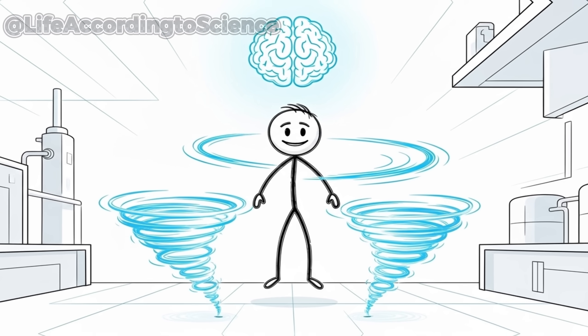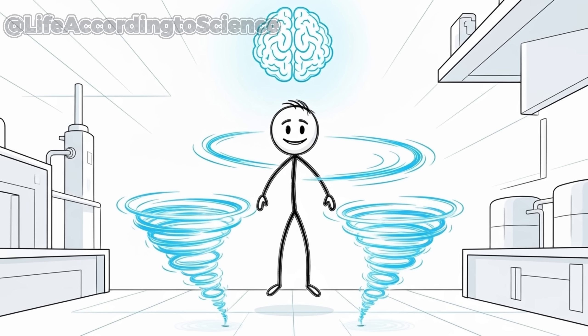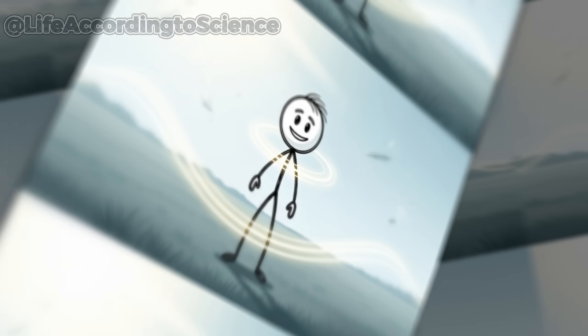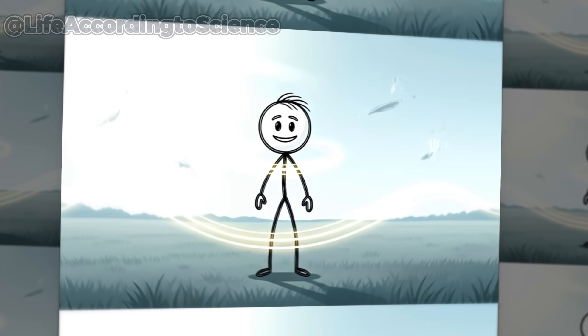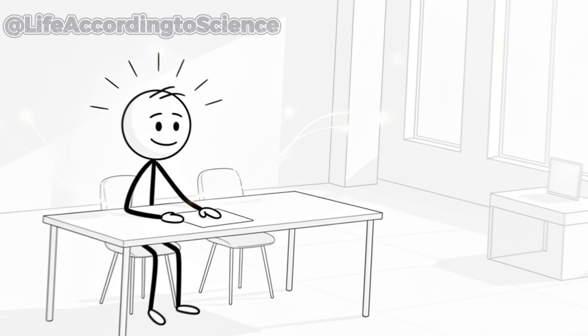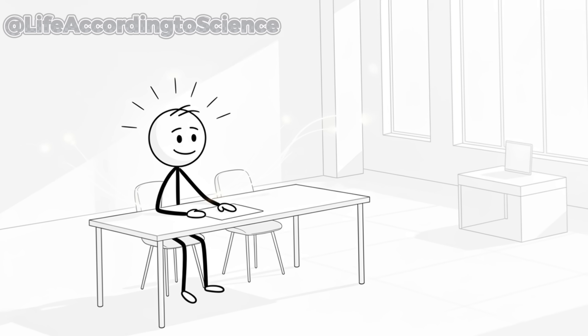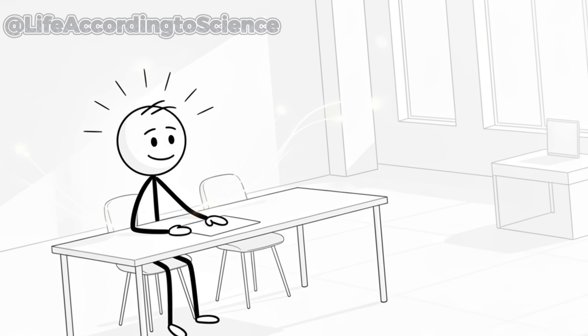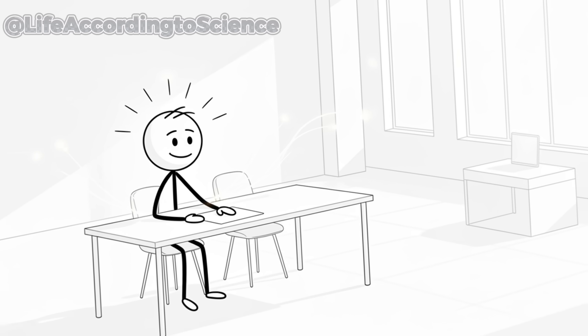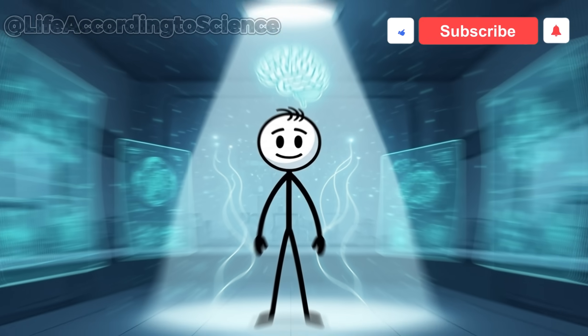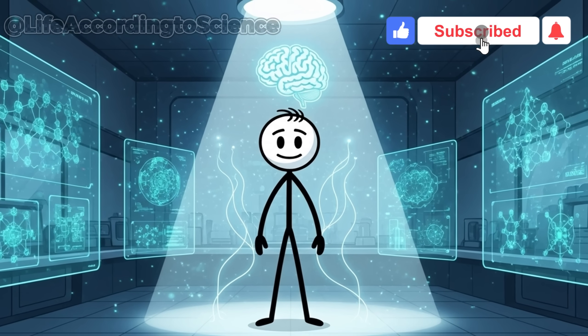Your brain loves ketones more than most people realize. They provide a smoother, steadier stream of energy compared to glucose, which fluctuates wildly throughout the day. This is why many report feeling more alert, focused, and mentally clean while fasting. The mind is no longer battling sugar highs and crashes. It's running on precision fuel.